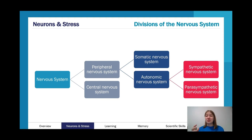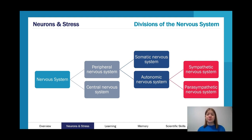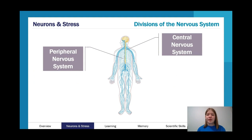The autonomic nervous system is split into the sympathetic and the parasympathetic nervous systems. You can think 'sympathetic for stress' and 'parasympathetic for peace' — or parachute, slowing things down. The sympathetic nervous system deprioritizes things like digestion and focuses on short-term survival, whereas the parasympathetic nervous system helps recuperate resources. The central nervous system consists of the brain and spinal cord, and everything else is peripheral.